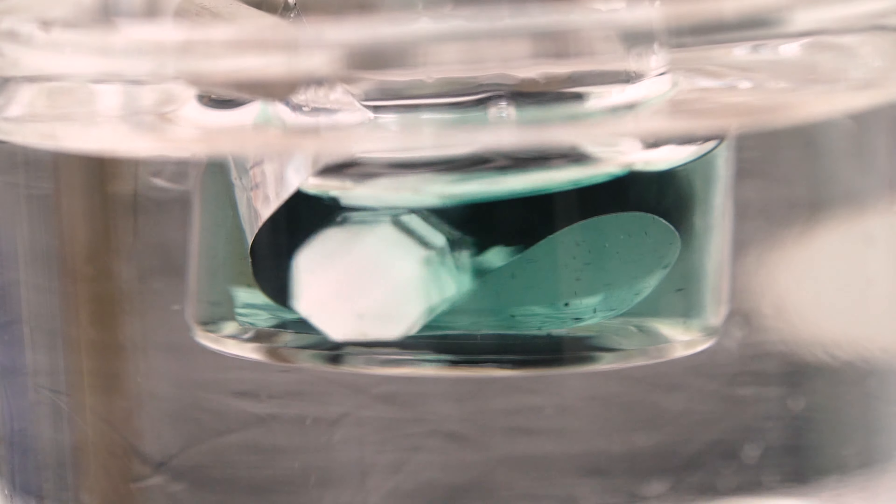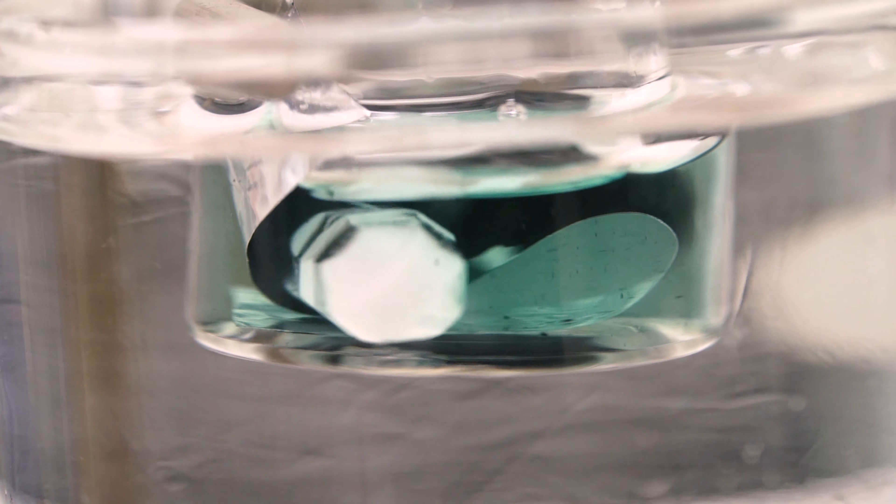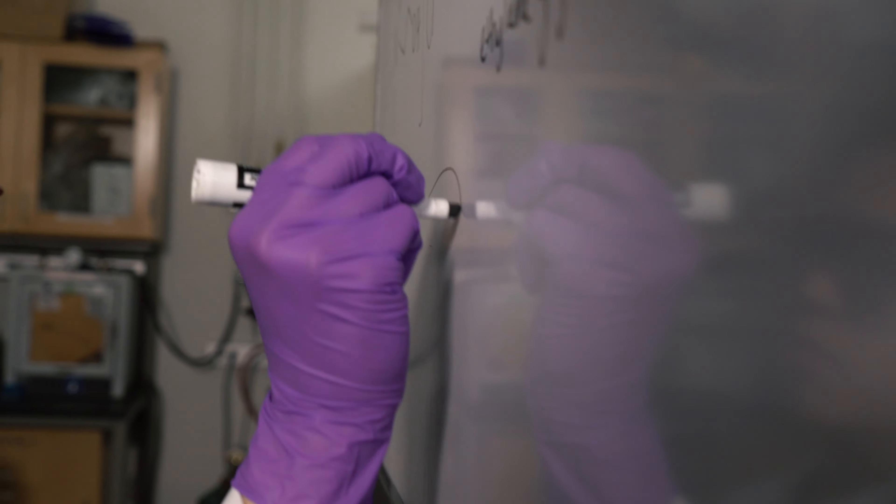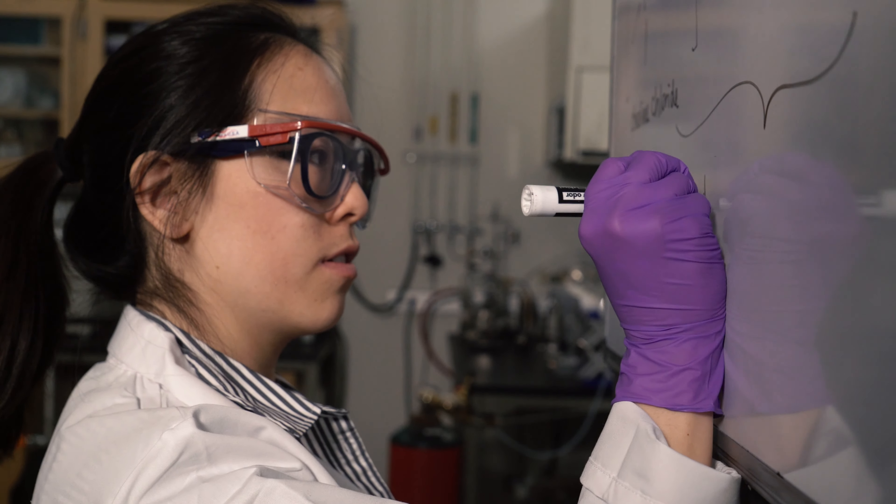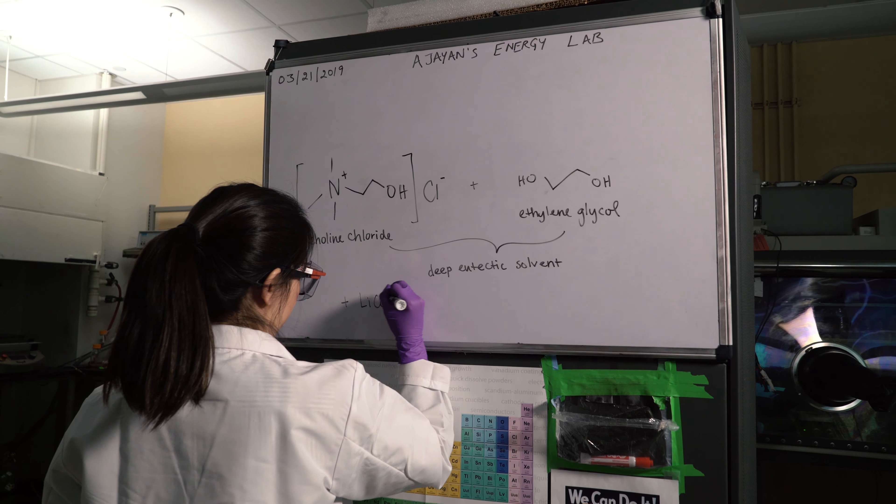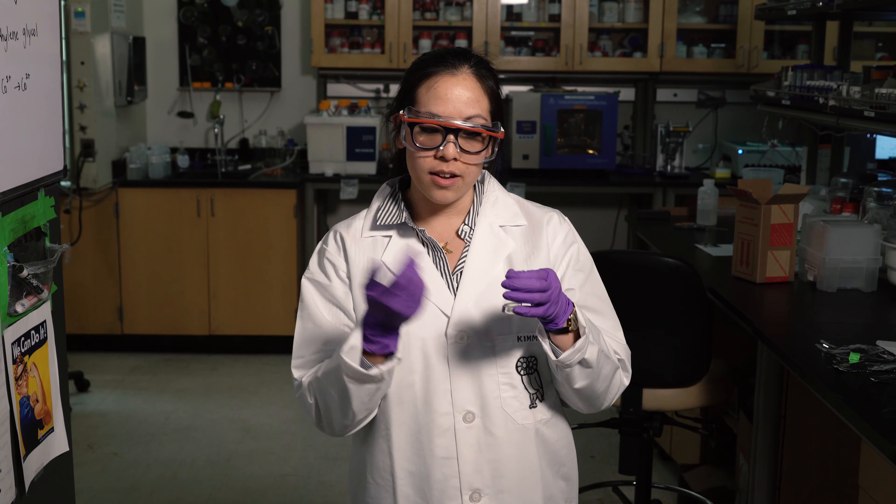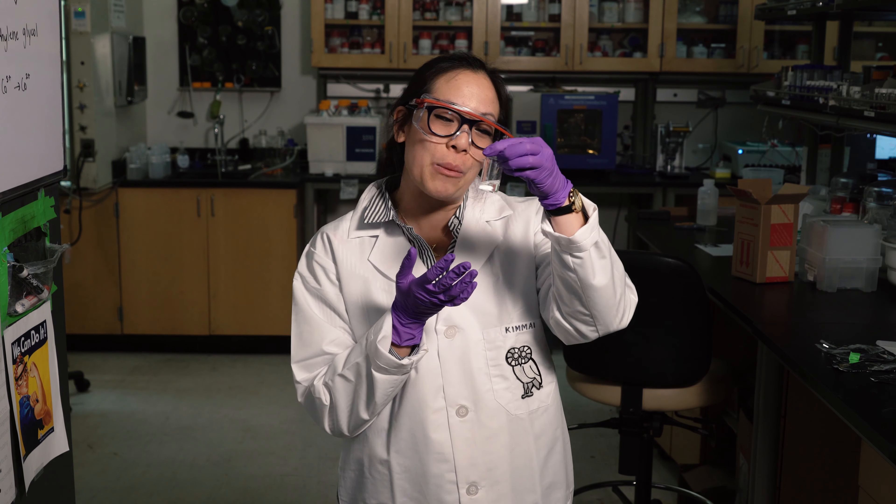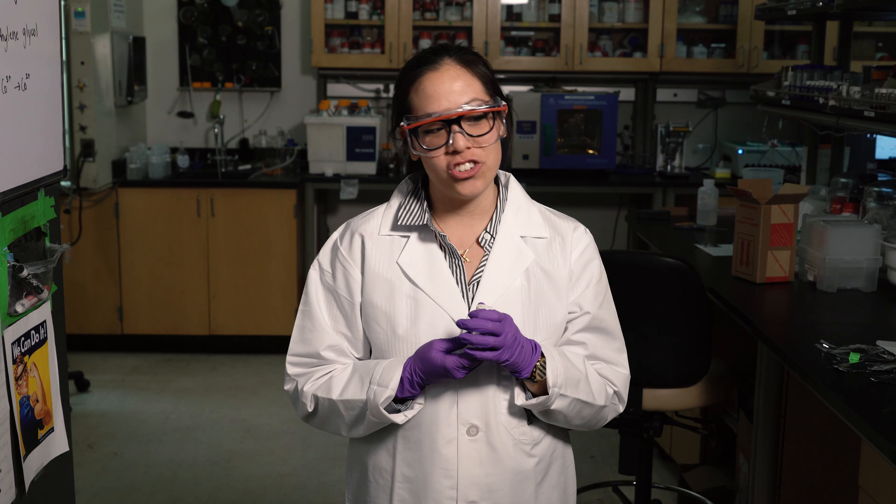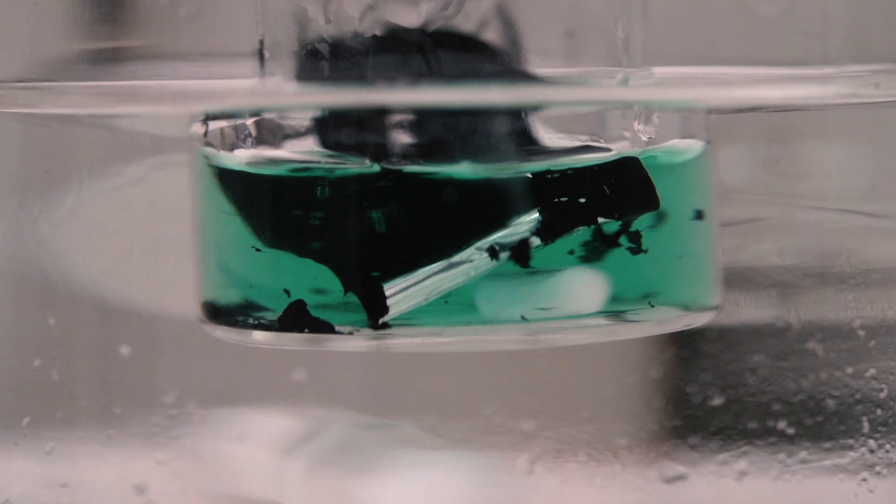What is particularly great about using these deep eutectic solvents is that they're really easy to make. We start with choline chloride, which is basically a chicken feed additive, and you mix it in a particular ratio with ethylene glycol, another commodity product, and at room temperature they form this clear, homogenous liquid, which is very easy to work with. If you spill it on yourself, it's fine. It's non-toxic.